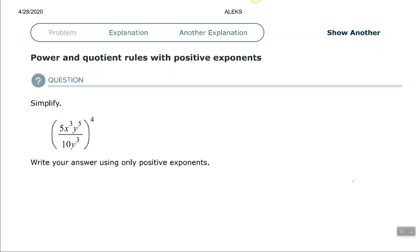So we want to simplify 5 times x to the 3rd times y to the 5th over 10 times y to the 3rd, all raised to the 4th power. Now again, as I've said before, make sure you look inside the parentheses to see if there's anything you can simplify before working outside of the parentheses.